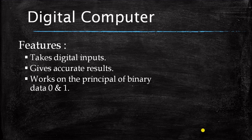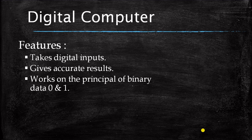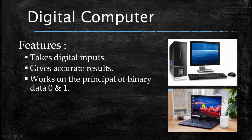Digital computers are very different from analog computers. They only take digital inputs, provide accurate results, and work on the principle of binary data — zero and one. A computer understands only two things: zero and one. Apart from these numbers, a computer doesn't understand anything. Examples of digital computers include desktop PCs and laptop PCs — PC stands for personal computer.